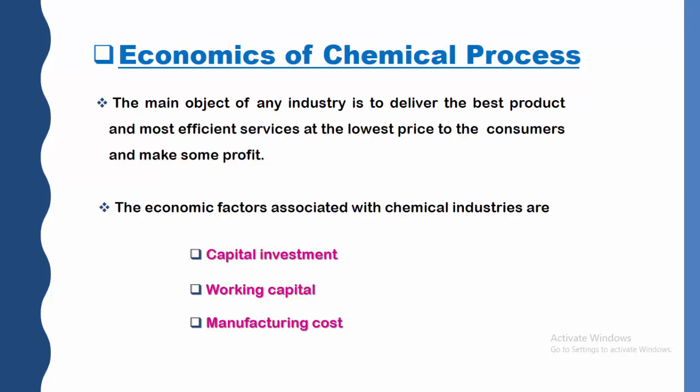Next is economics of chemical process. Economics of a chemical process refers to what type of expenses we are going to include for production — the cost of production, the product cost. The main objective of any industry is to deliver the best product and most efficient services at the lowest price to the consumer and make some profit. The economic factors associated with the chemical industry are three: capital investment, working capital, and manufacturing cost.